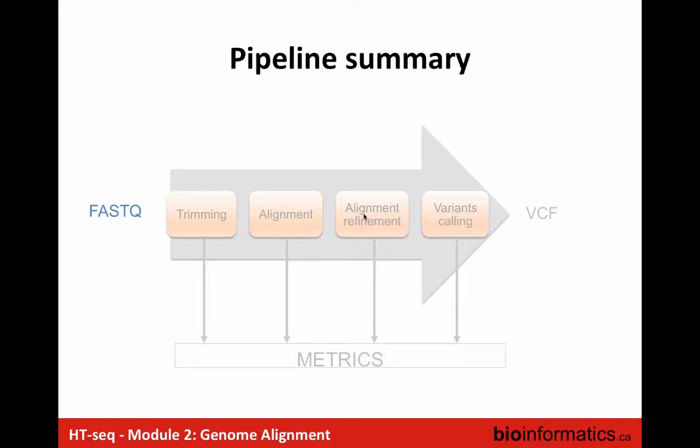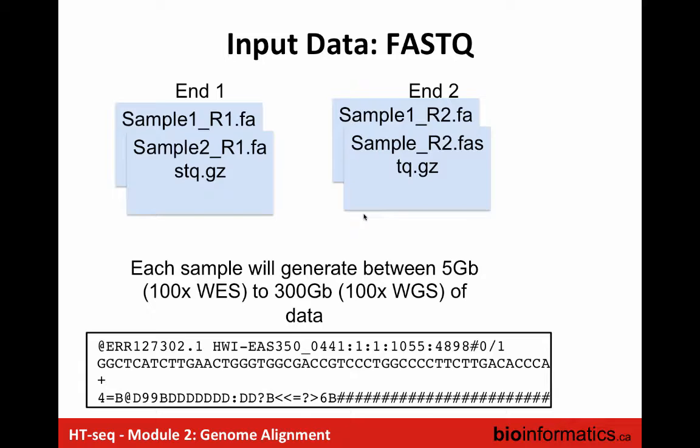The input data is the FASTQ file. Most people now do paired-end sequencing, where they sequence, for example, 100 base pairs at each end of each DNA fragment. So for each fragment you have two sequences, and you end up with two FASTQ files per sample — one for each end of the read.